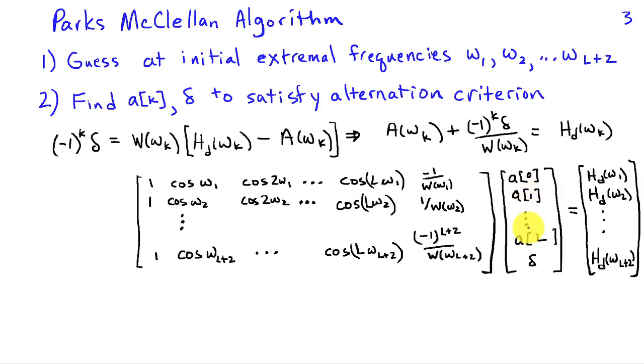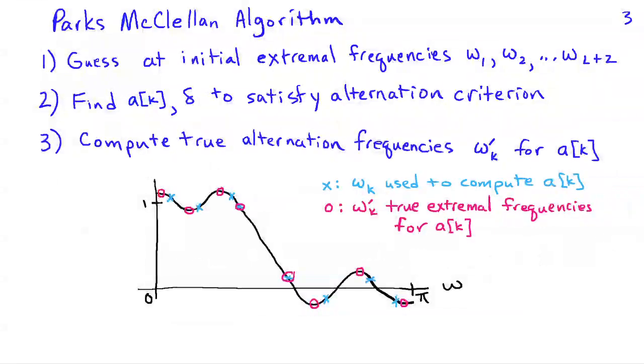So here we have L plus 2 unknowns that we wish to find and L plus 2 equations. So we can invert this matrix to solve for these unknowns and that will give us a candidate set of A's and a delta that have this alternating property. Now the key thing is that even though those A's and the delta satisfy the alternating property, we don't know whether the true maxima and minima correspond to the extremal frequencies that we chose when we designed the AKs.